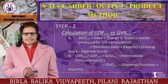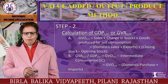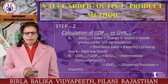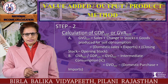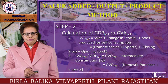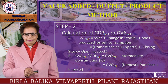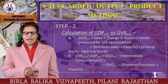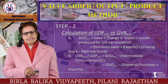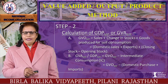GVO at market price equals sales plus change in stocks plus goods produced for self-consumption. One important point: whenever domestic sales are given in a numerical, you have to add exports, plus closing stock minus opening stock (that is, change in stock). GVA at market price, or GDP at market price, equals GVO at market price minus intermediate consumption. Also, whenever domestic purchase is given, you have to add imports.